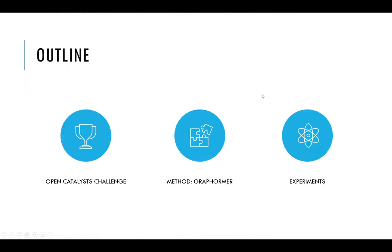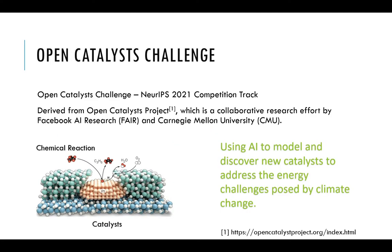In today's talk, I'd like to first quickly go through the challenge, then introduce our method Graphormer, and finally show the experiment results. The Open Catalyst Challenge is from NeurIPS 2021 competition track. It is derived from Open Catalyst Project, which is a collaborative research effort by Facebook AI Research and CMU.